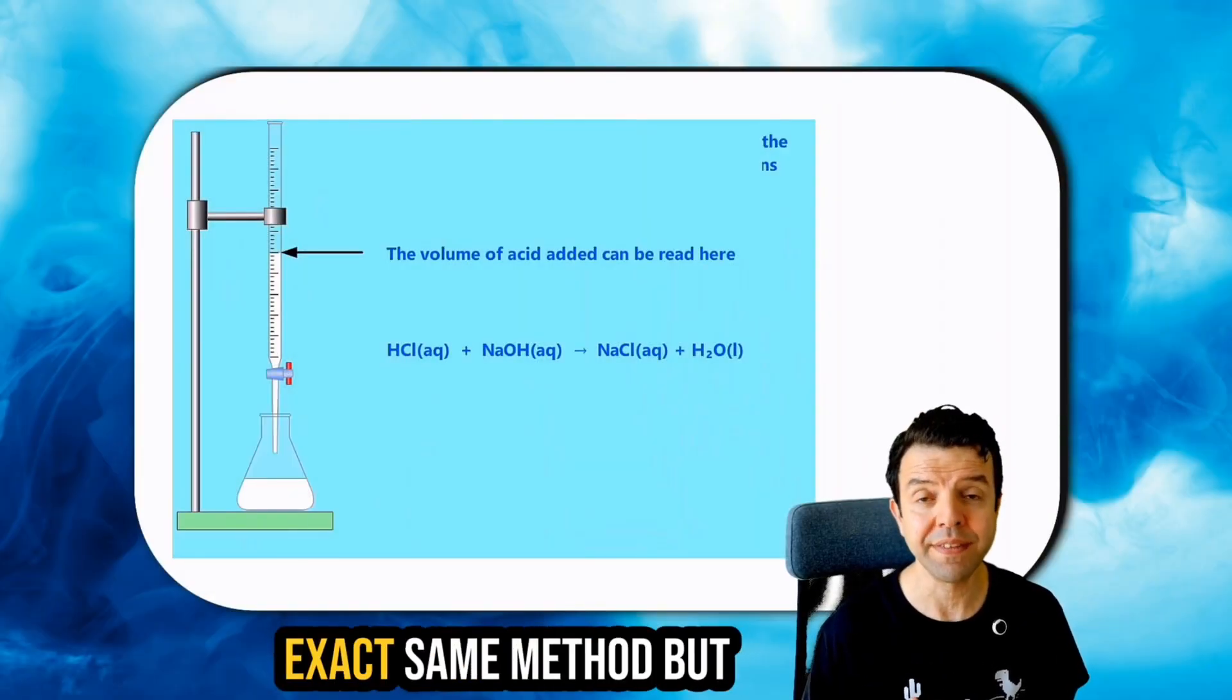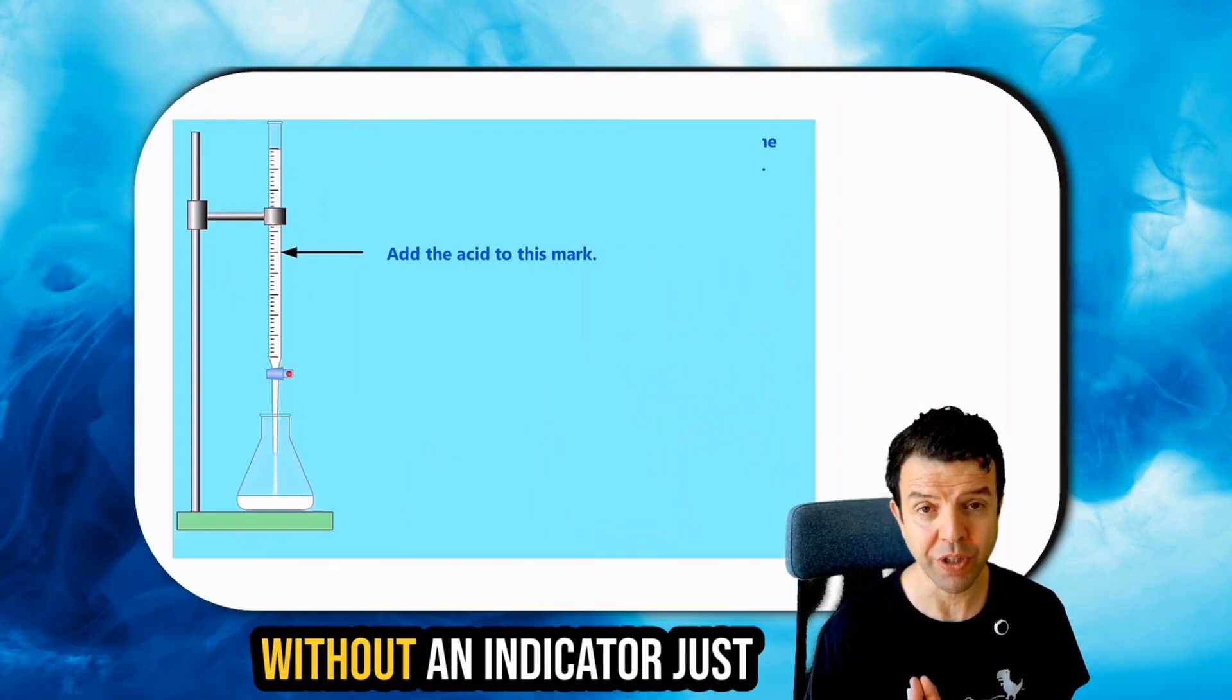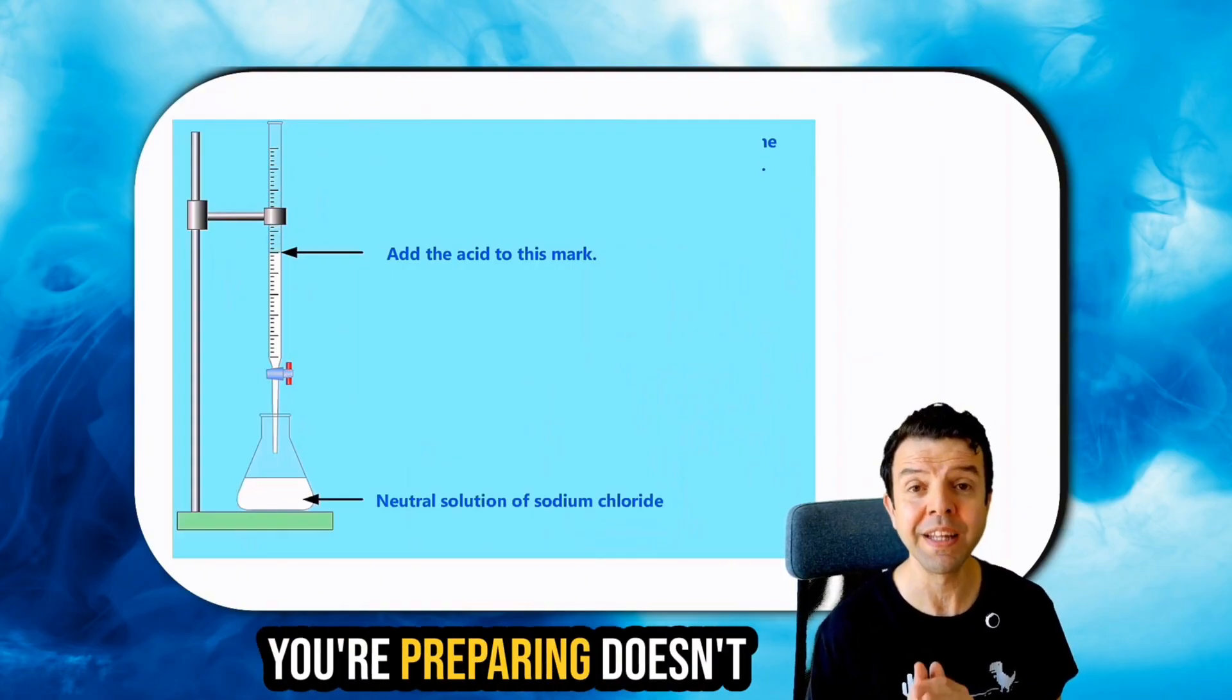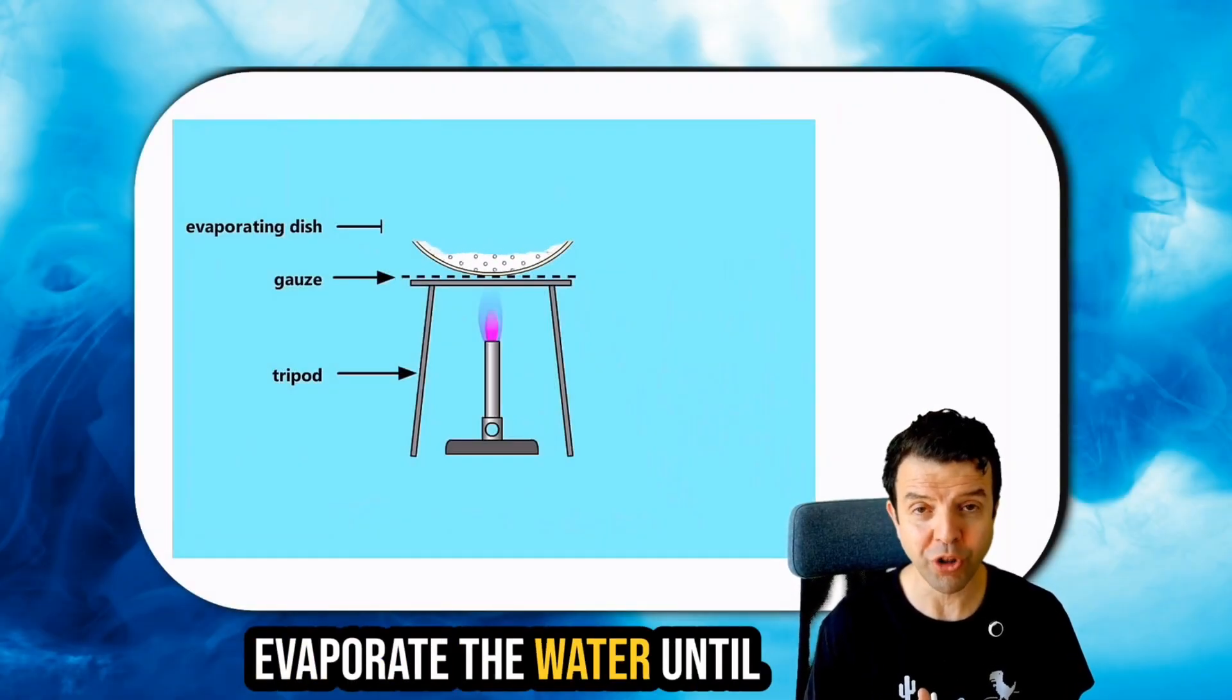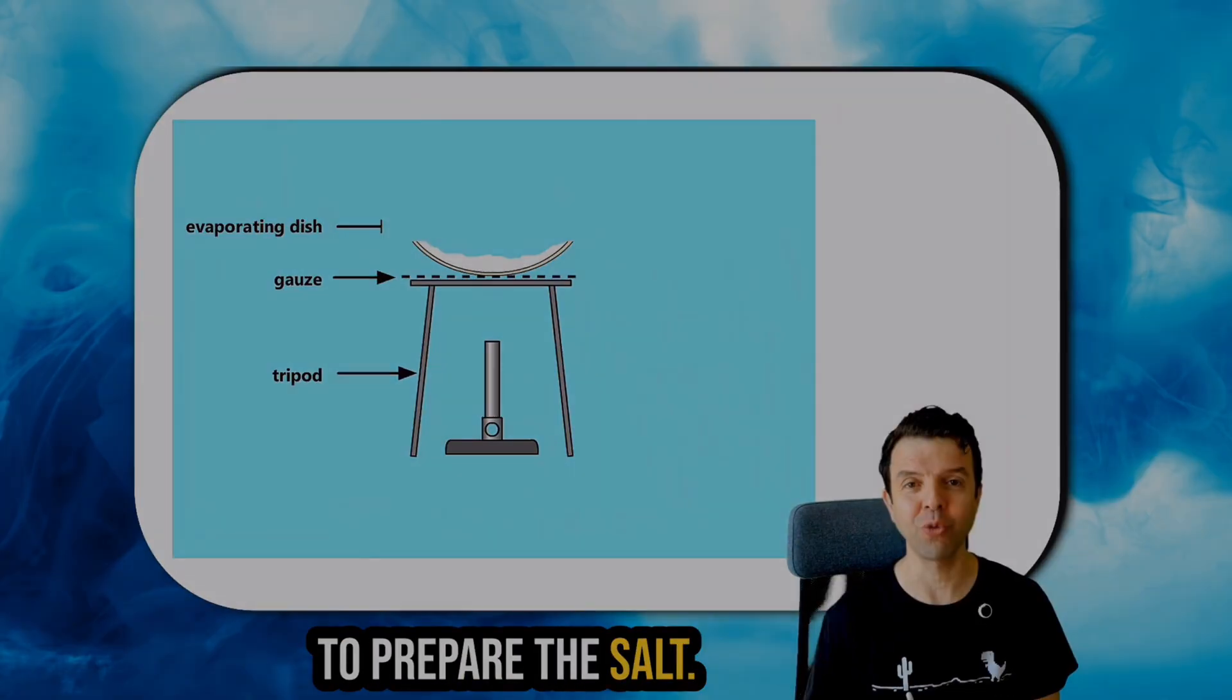Then we will repeat the exact same method, but without an indicator, just to ensure that the salt you're preparing doesn't have an indicator with it. Following this, we will evaporate the water until the point of crystallization to prepare the salt.